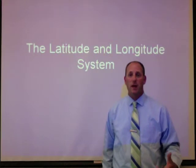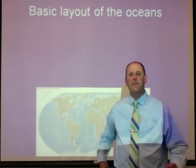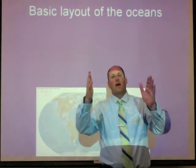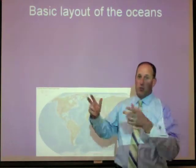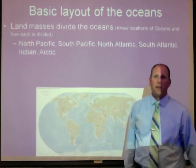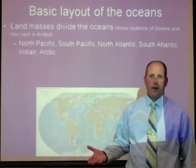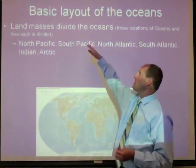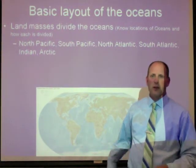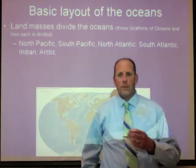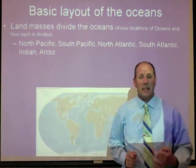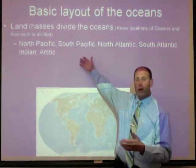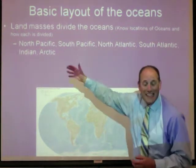Titles are extremely important — they allow us to find information later on. The first part of what we're going to do goes on the left-hand side: the basic layout of the oceans. Write that on the left side of the line. On the right-hand side, that's where the detail information goes. The key point is that land masses divide the oceans. On the right, also write down our oceans: North Pacific, South Pacific, North Atlantic, South Atlantic, Indian Ocean, and the Arctic Ocean. Make sure you spell Arctic correctly — there are two C's.